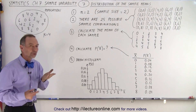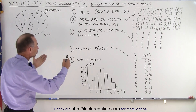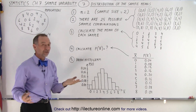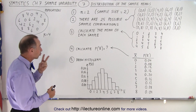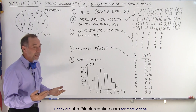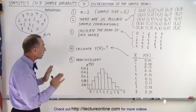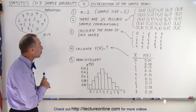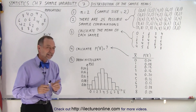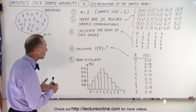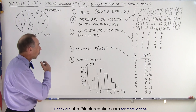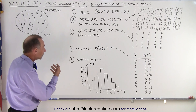Now, what do we do in order to come up with a distribution of the sample means? Well, first of all we need to understand what the sample size is. In this case the sample size is 2. We can look at all the possible different kinds of samples that we could draw from that, and it turns out there are 25 different possibilities.